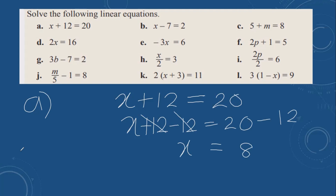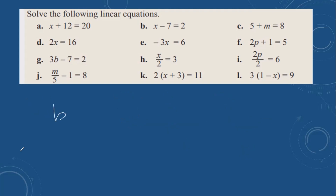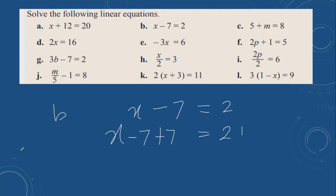Then we will do the next one: x minus 7 equals 2. The opposite of minus 7 is plus 7. So you have to do the same thing to the other side also. Minus 7 and plus 7 cancel out, so x is equal to 9.